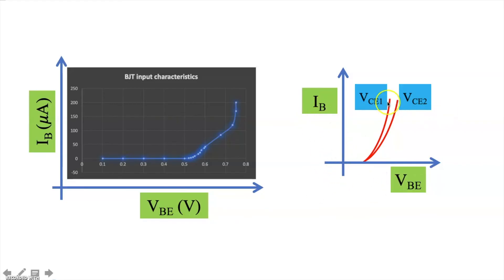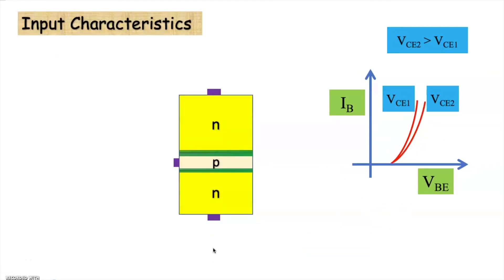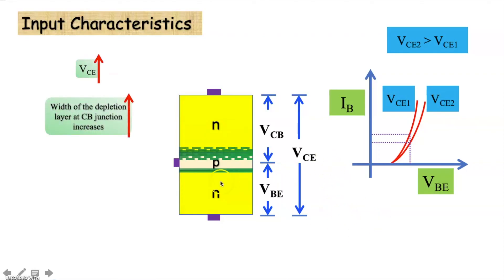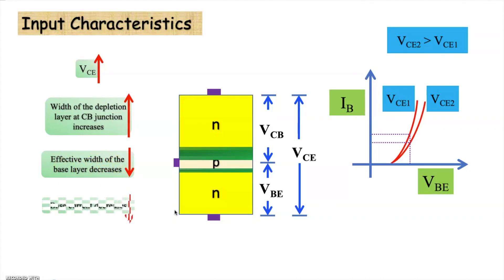Theoretically, input characteristics can be represented for different output voltages as shown here. In the input characteristics we can see that with the increase in output voltage VCE, the graph moves towards the right side of the plot. That is, for the same input voltage VBE, the base current IB reduces as VCE increases. To explain this, we represent VCE as the sum of VCB and VBE. As VCE increases, VCB also increases, due to which the depletion layer at the CB junction increases. This causes the effective width of the base layer to decrease, which reduces recombination at the base layer and also reduces the base current.